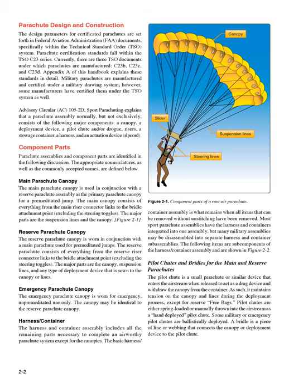Parachute Design and Construction. The design parameters for certificated parachutes are set forth in Federal Aviation Administration documents, specifically within the Technical Standard Order system. Parachute certification standards fall within the TSO C-23 series. Currently, there are three TSO documents under which parachutes are manufactured: C-23B, C-23C, and C-23D. Appendix B of this handbook explains these standards in detail. Military parachutes are manufactured and certified under a military drawing system; however, some manufacturers have certified them under the TSO system as well.